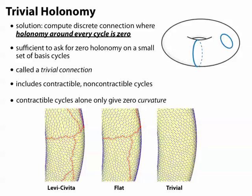And finally, if we really make sure that around every loop holonomy vanishes, we get a path-independent notion of parallel transport, which means we can construct a nice, smooth vector field everywhere.